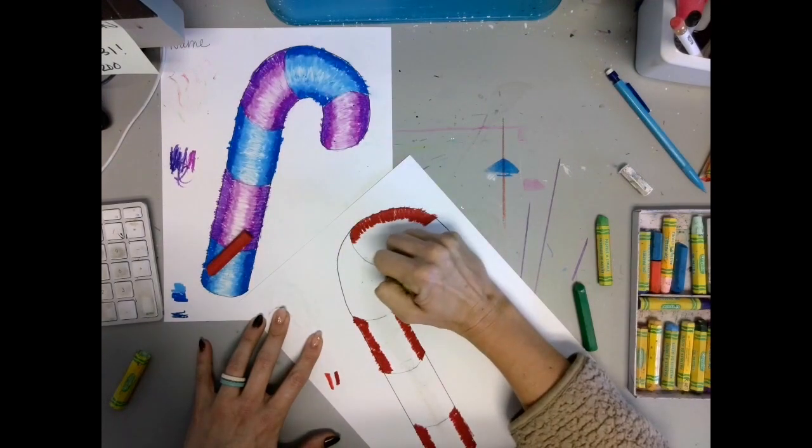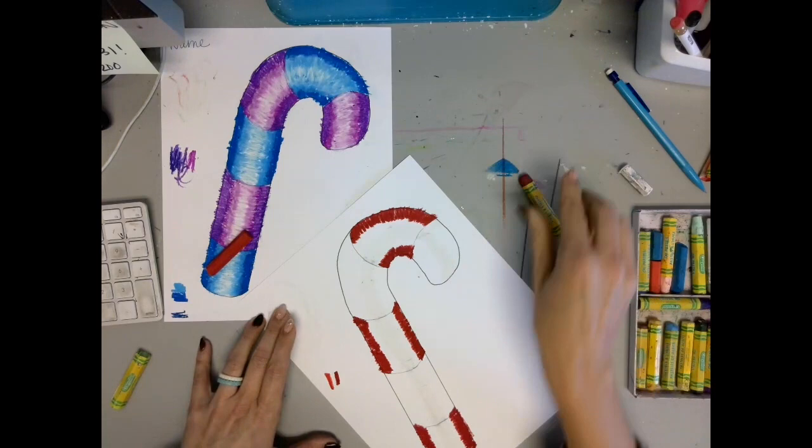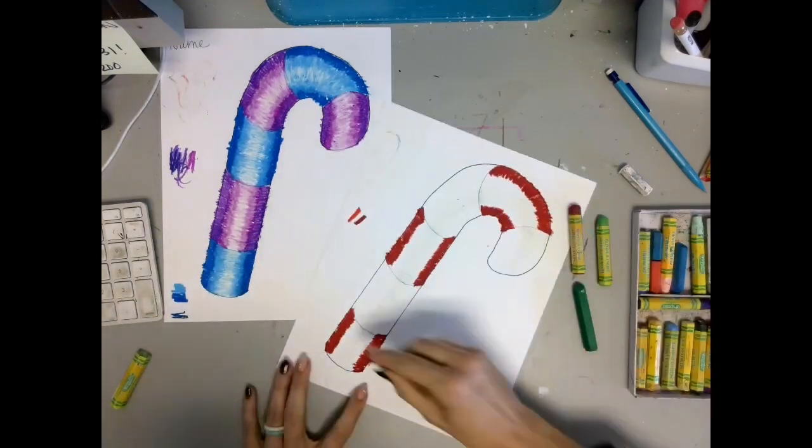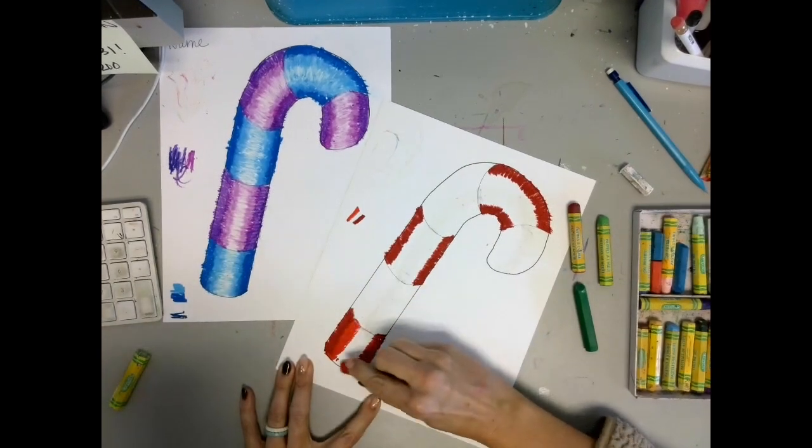When you're done with the dark shade, switch over to your light shade. Make the same back and forth motions right next to the dark color that you just used.